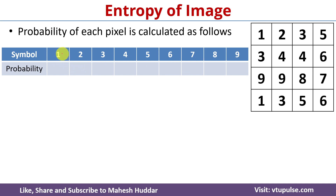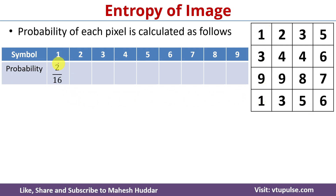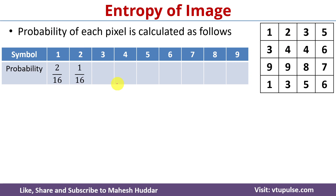Now we will calculate the probability of each pixel value. To calculate the probability of pixel value 1, we count how many times pixel value 1 appears in the image out of the total number of pixels. Pixel value 1 appears 2 times, so the probability of pixel value 1 is 2/16. Similarly, pixel value 2 appears only once, so the probability of pixel value 2 is 1/16. We calculate the probabilities for all remaining pixel values in the same way.